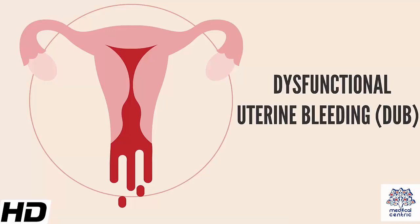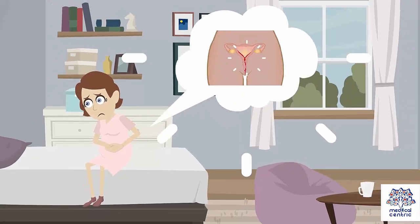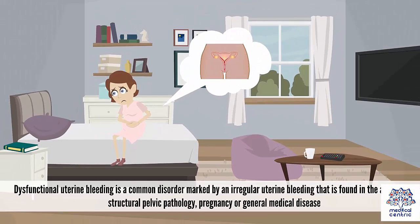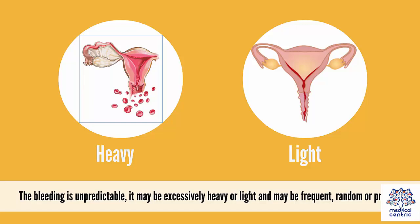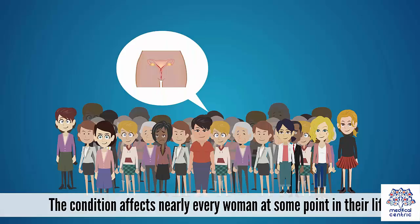Today's topic is dysfunctional uterine bleeding, or DUB. Dysfunctional uterine bleeding is a common disorder marked by irregular uterine bleeding found in the absence of structural pelvic pathology, pregnancy, or general medical disease. The bleeding is unpredictable – it may be excessively heavy or light and may be frequent, random, or prolonged. The condition affects nearly every woman at some point in their life.